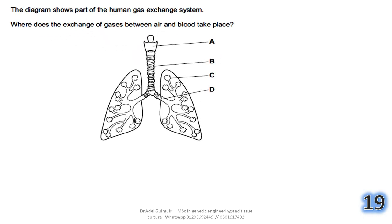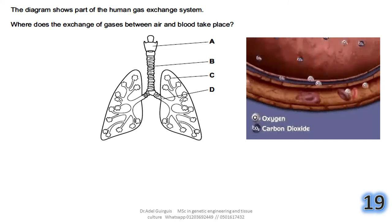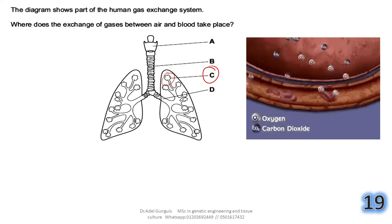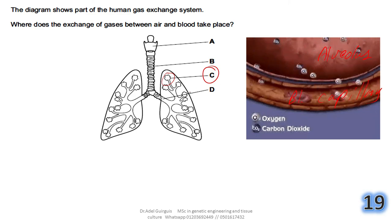Question 19: the diagram shows part of the human gas exchange system. Where does the exchange of gases between air and blood take place? The answer is obvious — it takes place at the alveoli, where the thin alveolus wall and the blood capillary wall are each only one cell thick. The answer is C.